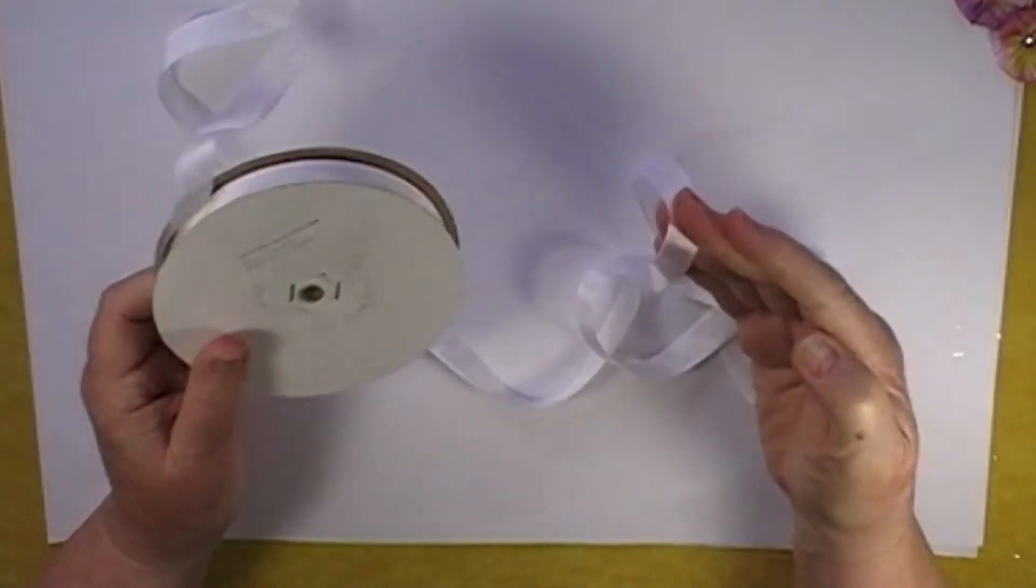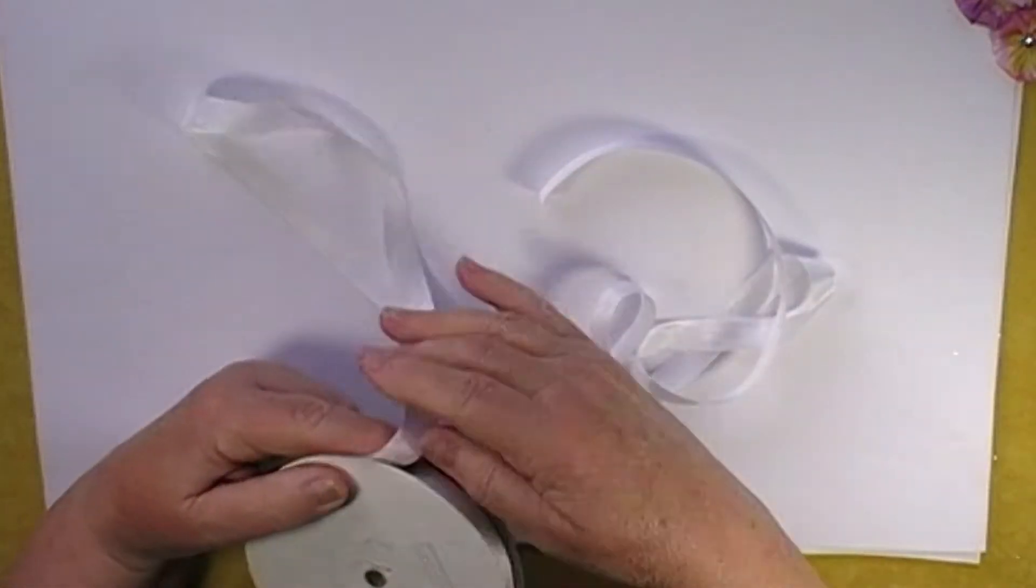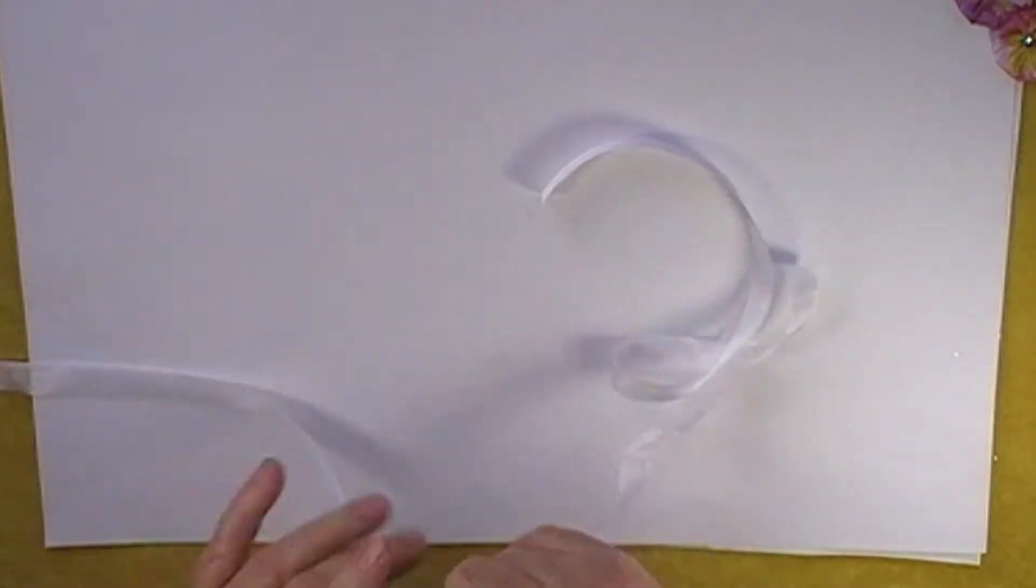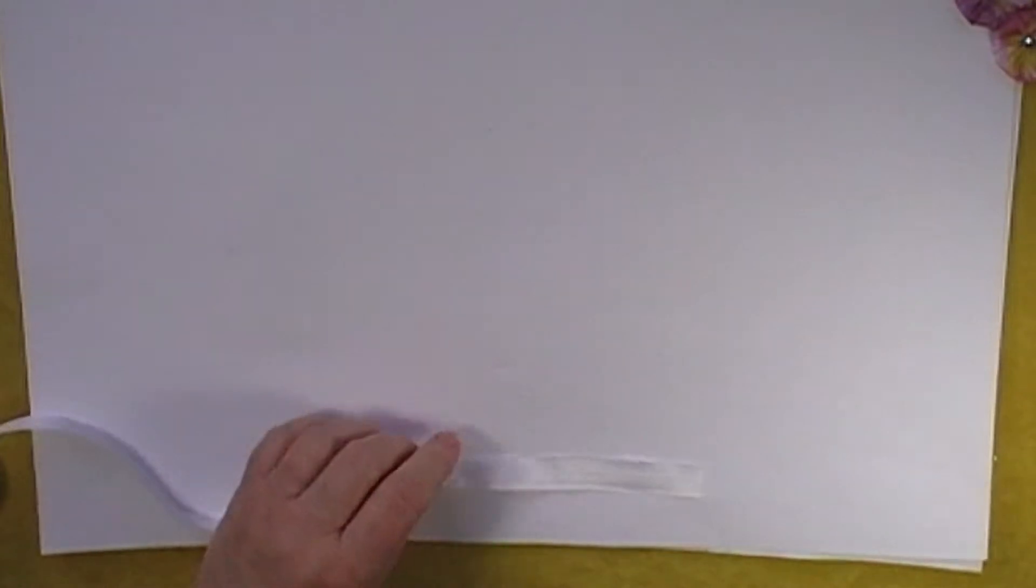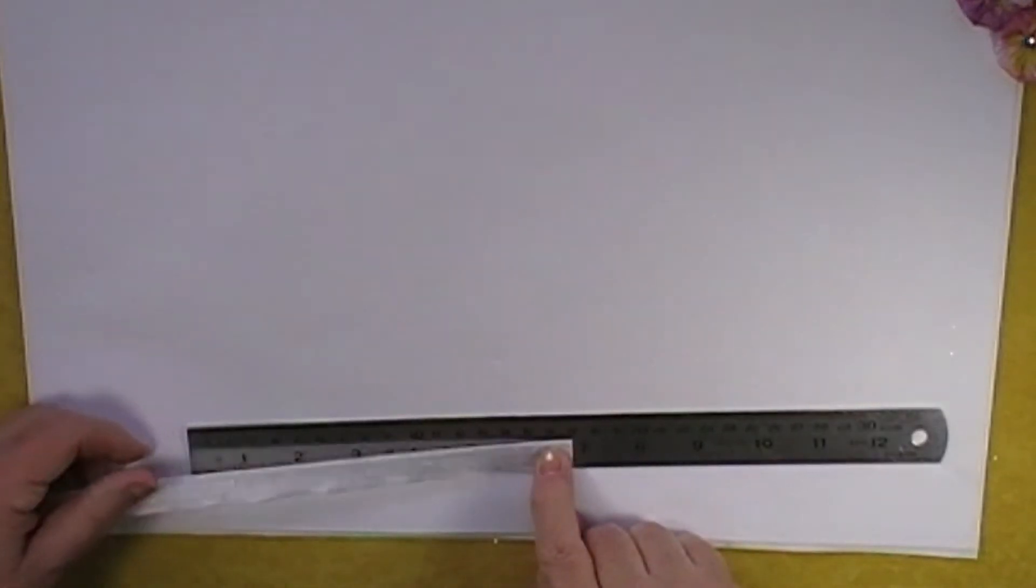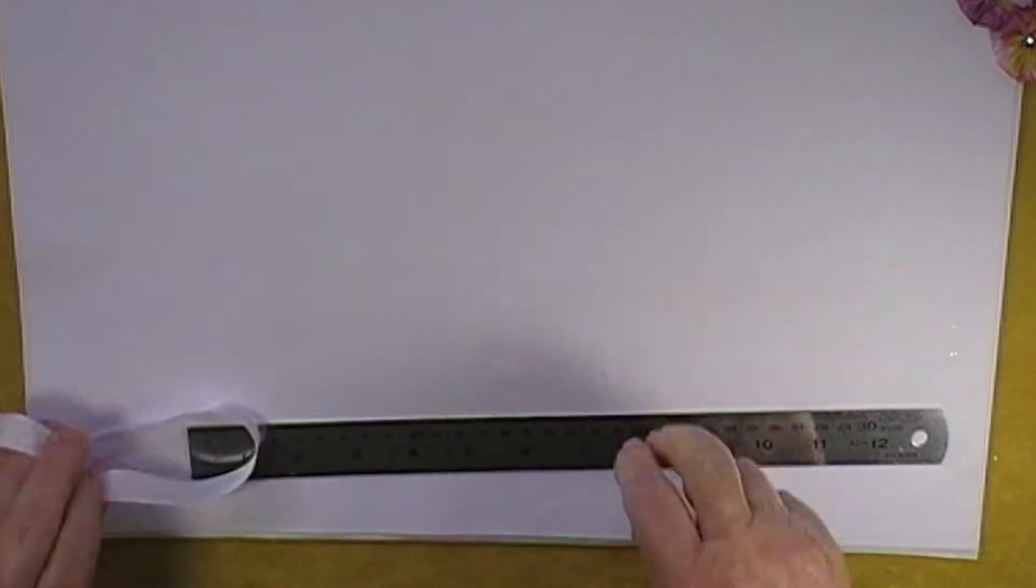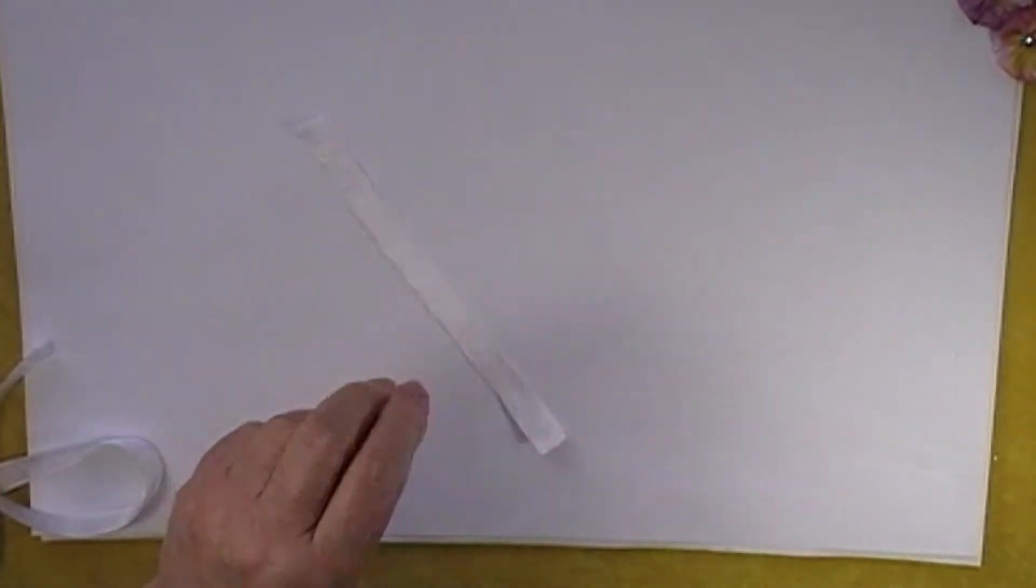I used this seam binding and it's just plain white and I used a piece about seven inches long. It doesn't have to be that accurate and then I've got a needle and thread.